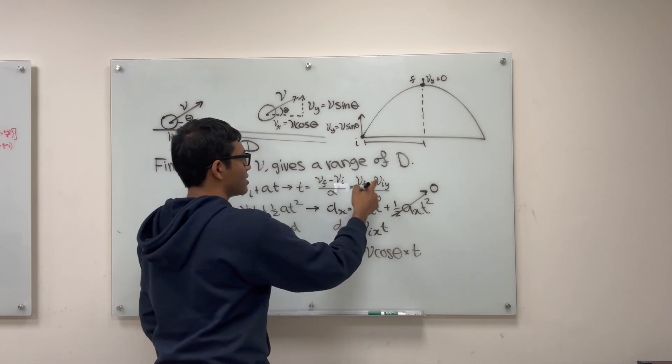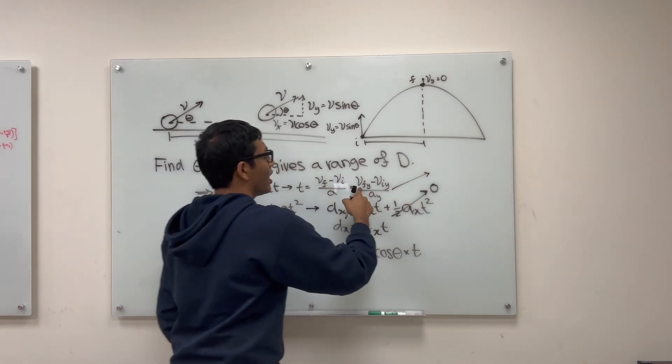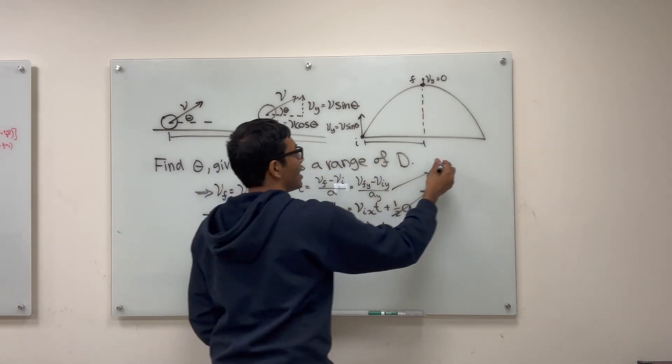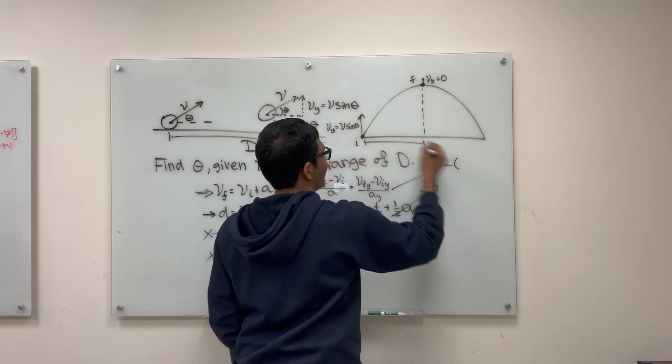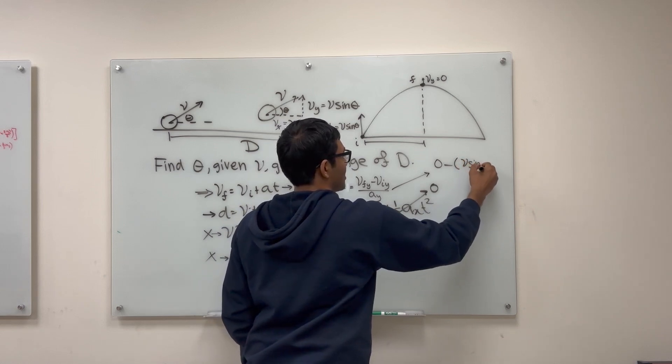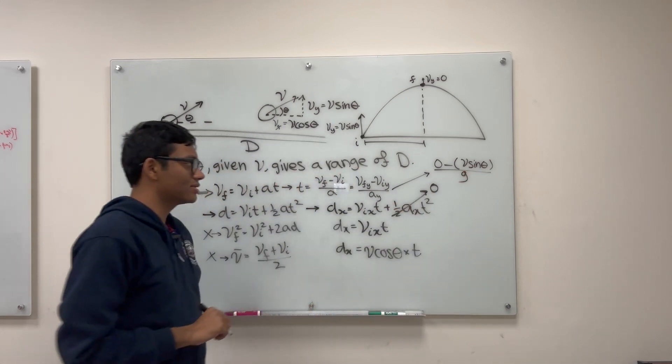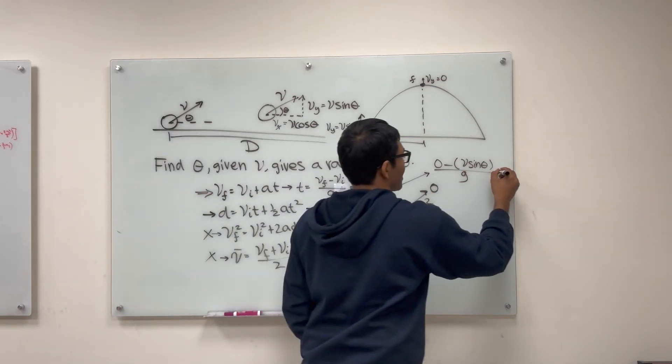So this is going to be vfy, that's going to be zero at the max altitude, and viy is going to be v sine theta, divided by a sub y. Now the acceleration in the y direction is just g. So this is the airtime of the ball, or is it?